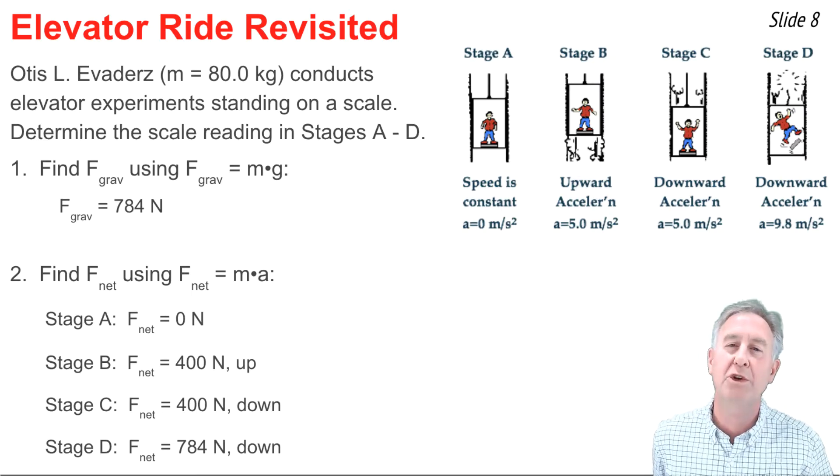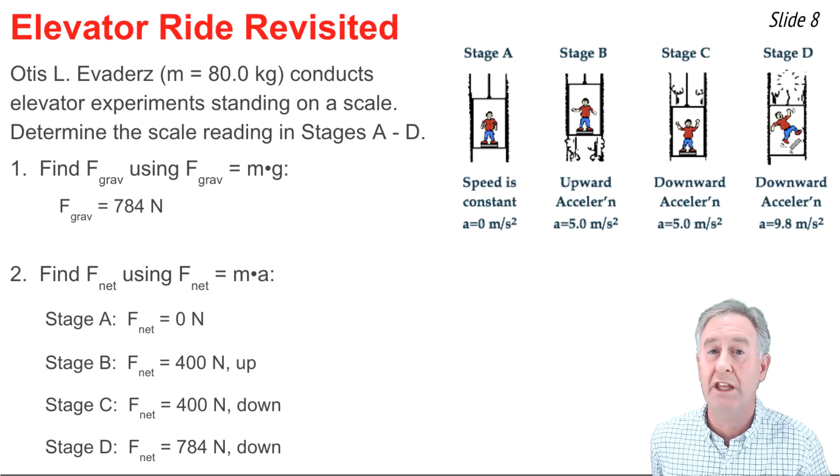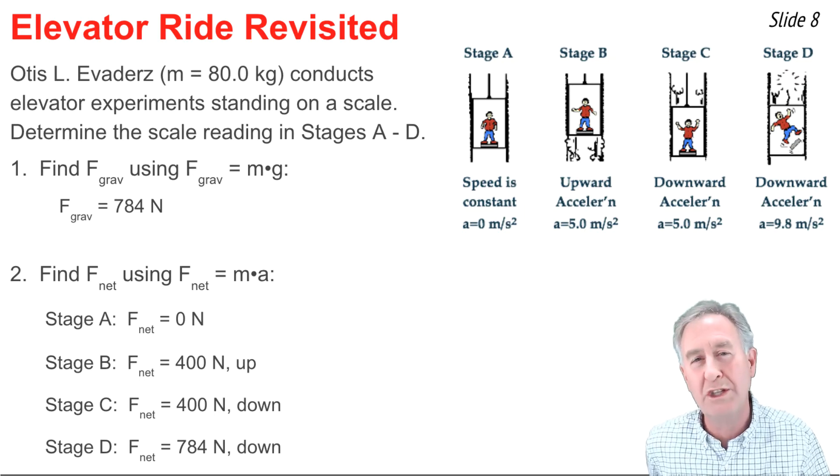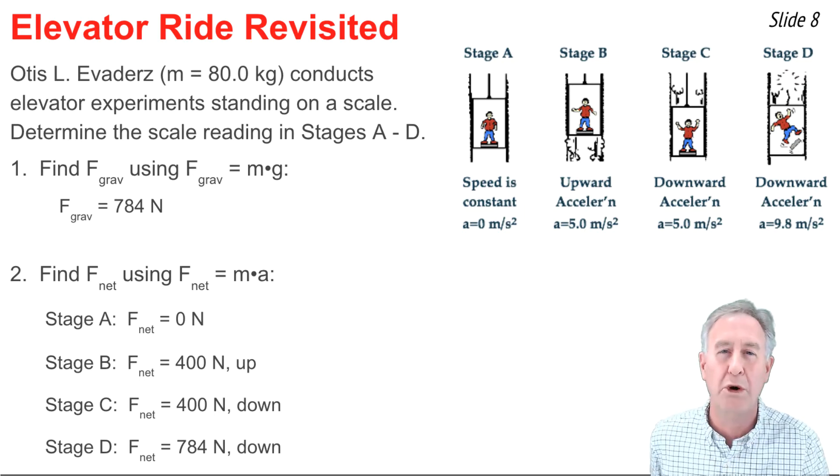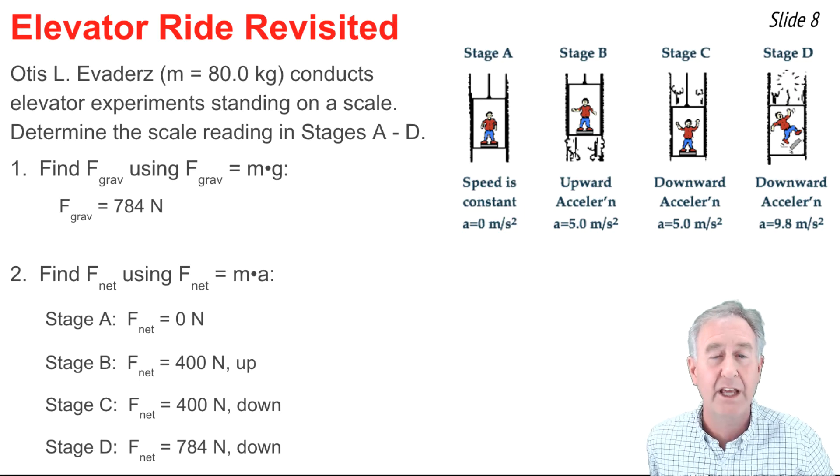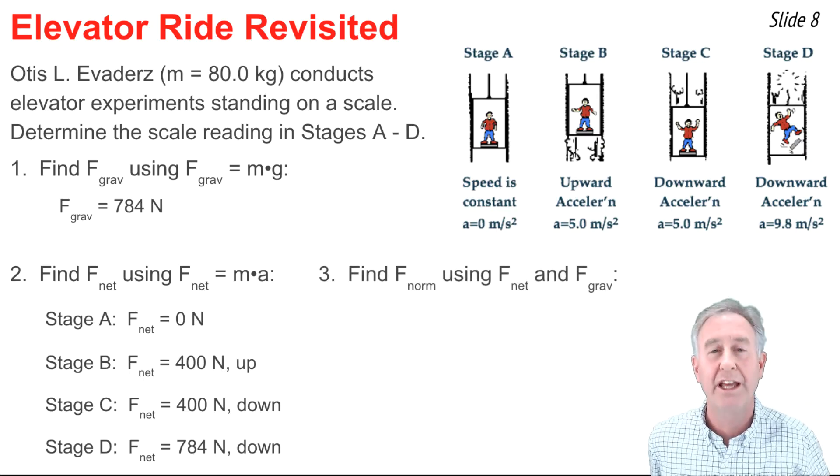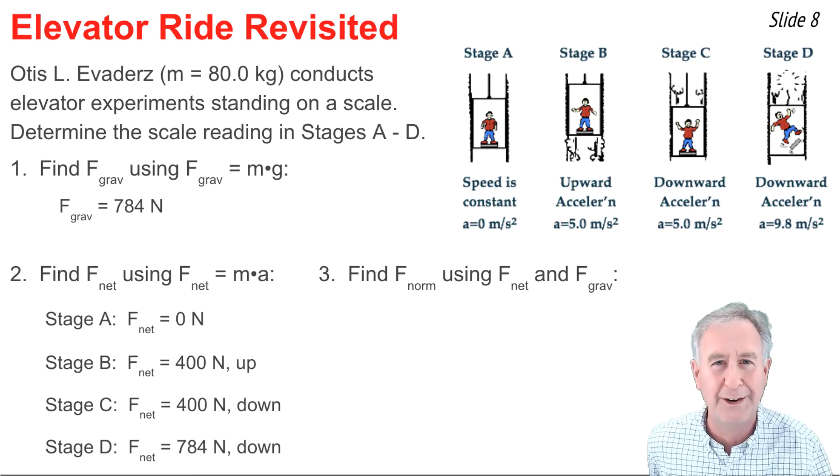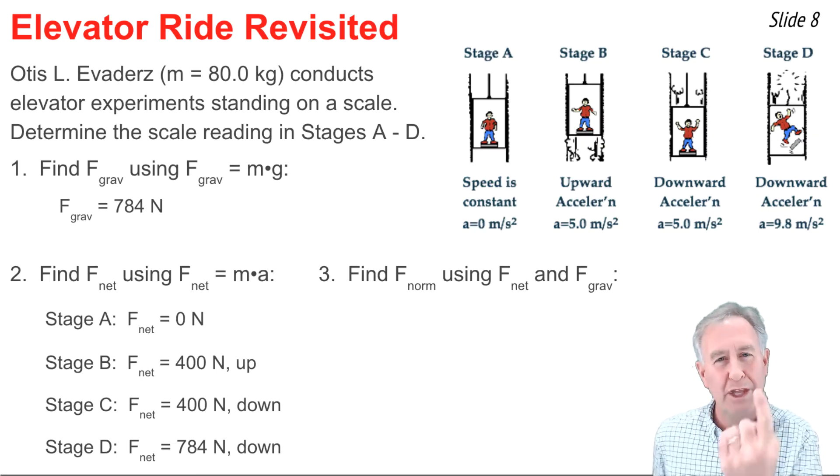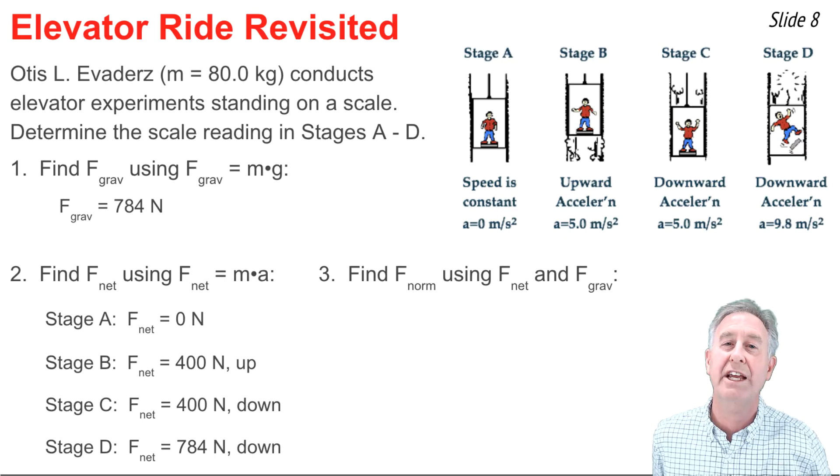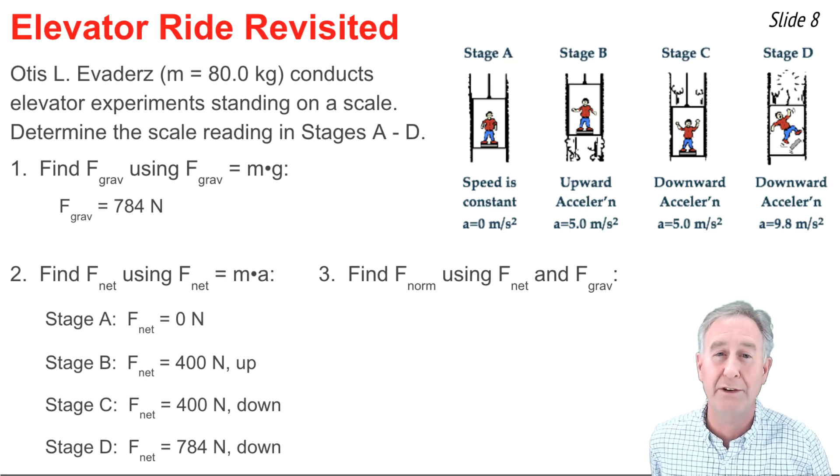Now I can calculate the normal force value by using the F net and the F grav. The way I think of this is F net tells me who wins the tug of war between the up normal and the down gravity, and it also tells me the winning margin. For example, in stage A, it's a tie. There's no winner. The F net is zero, so the up equals the down, and I can say the normal force is 784 newtons.